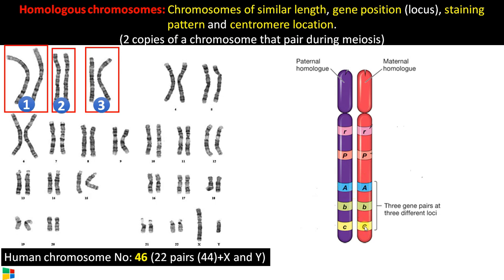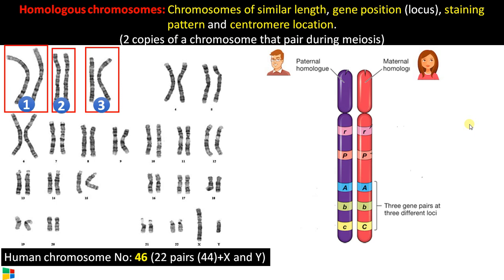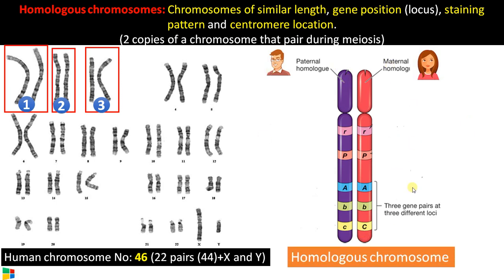Here comes the concept of alleles. There may be a slightly different version of the same gene, which is called an allele. Here you can see there is capital C, and here it is small c. Remember, both of these code for the same trait or character. As we all know, alleles are alternate forms of a gene. We have two copies — one chromosome from the father and the other chromosome from the mother — and this makes a homologous pair.